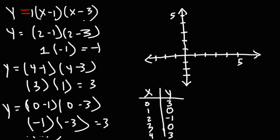When you have at least 5 points including the vertex, you have enough to graph the function. Let's plot it. We have the y-intercept at 0 comma 3, the x-intercept at 1 comma 0, another x-intercept at 3 comma 0, another point at 4 comma 3, and the vertex at 2 comma negative 1. We can see that the graph indeed opens upward.